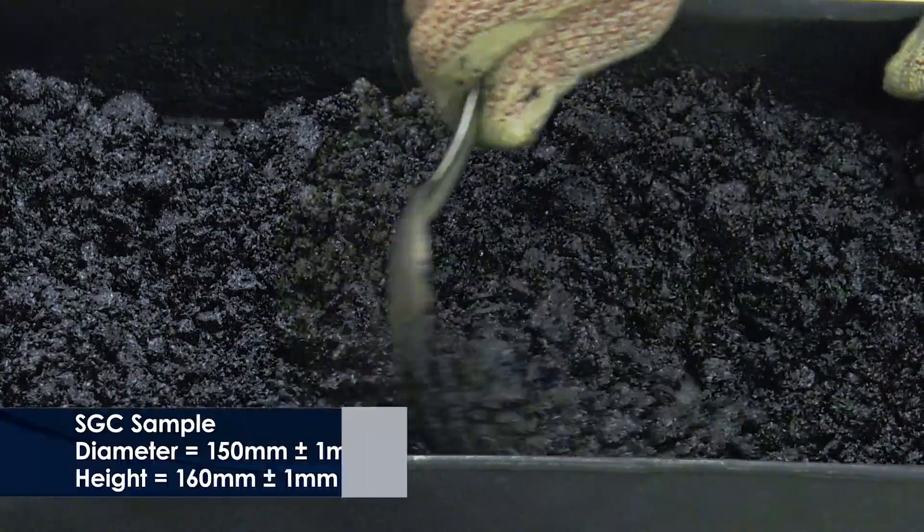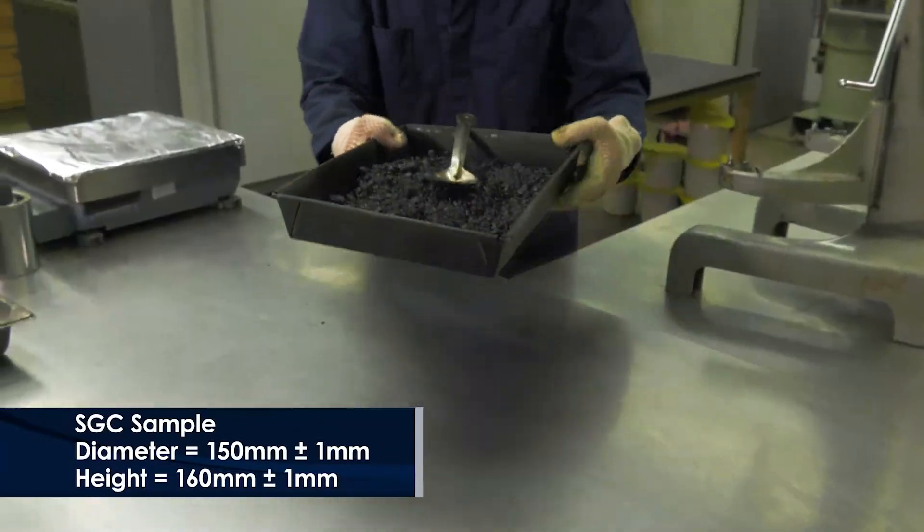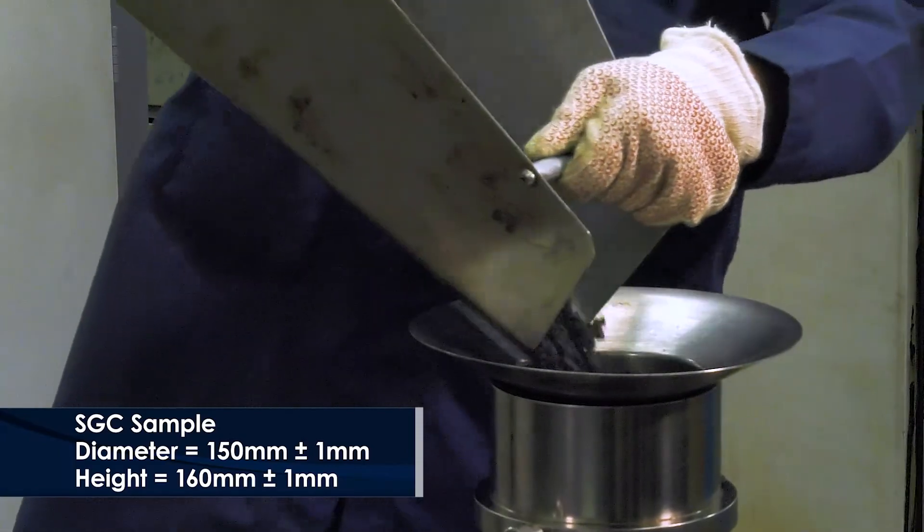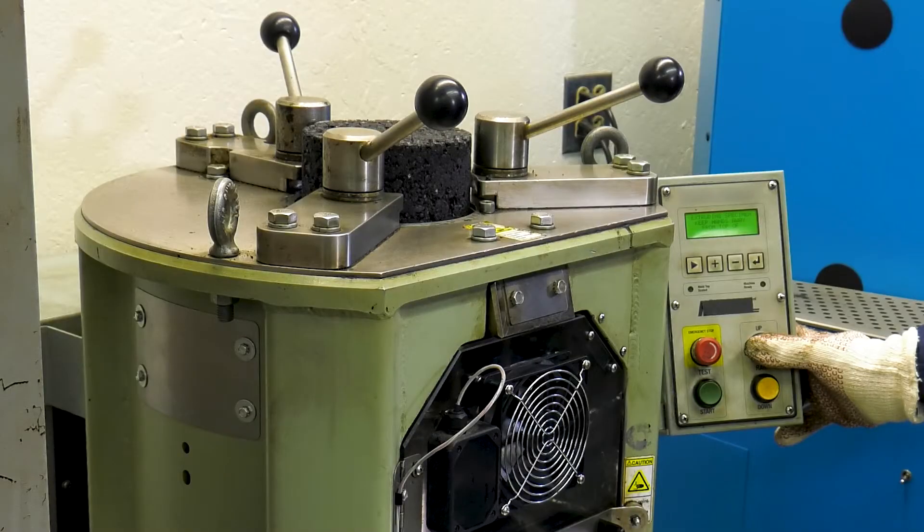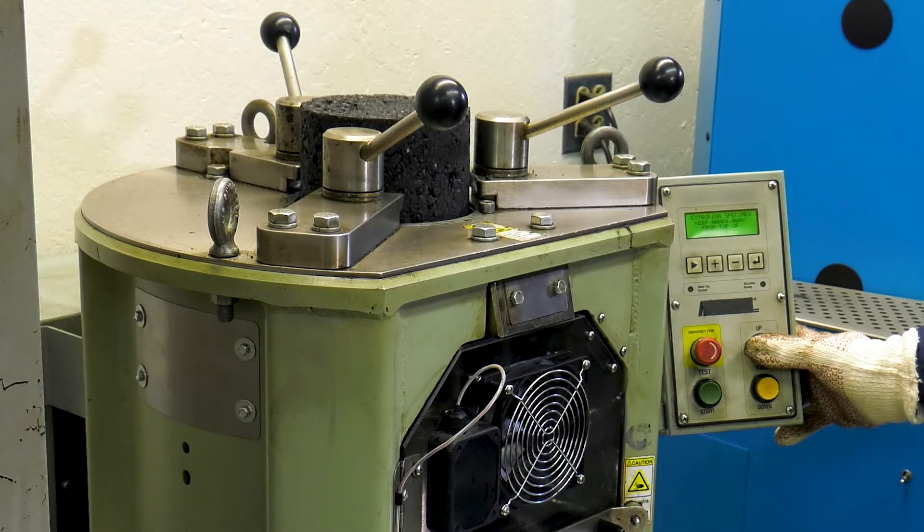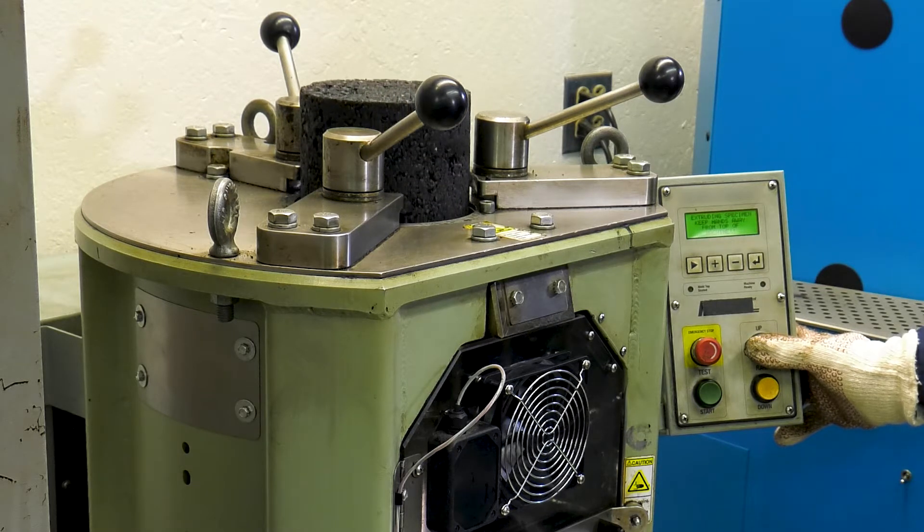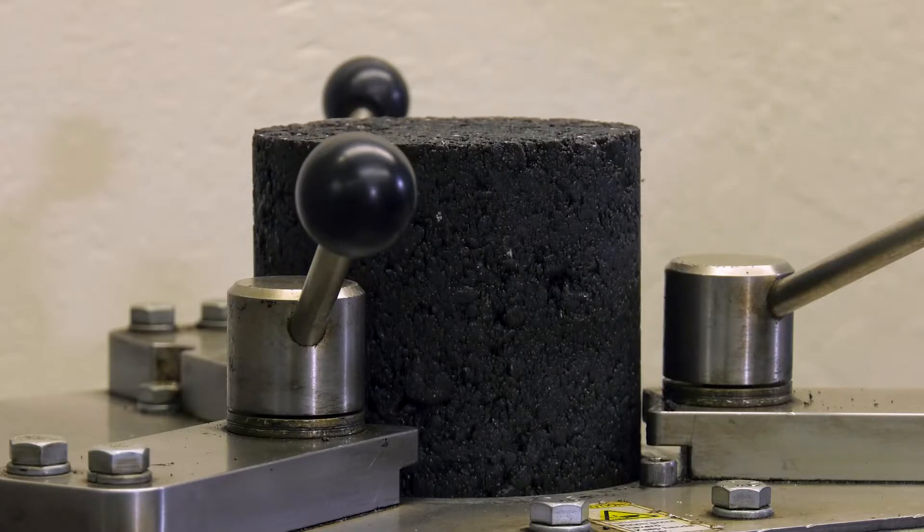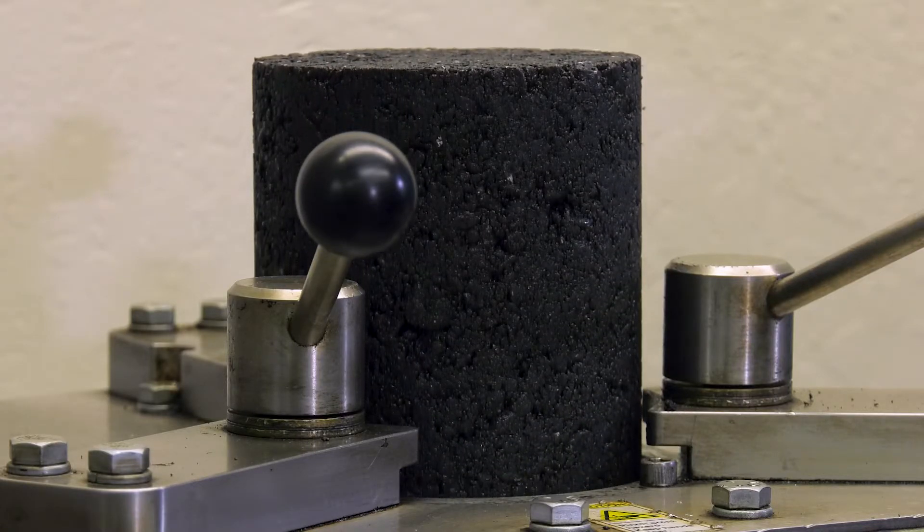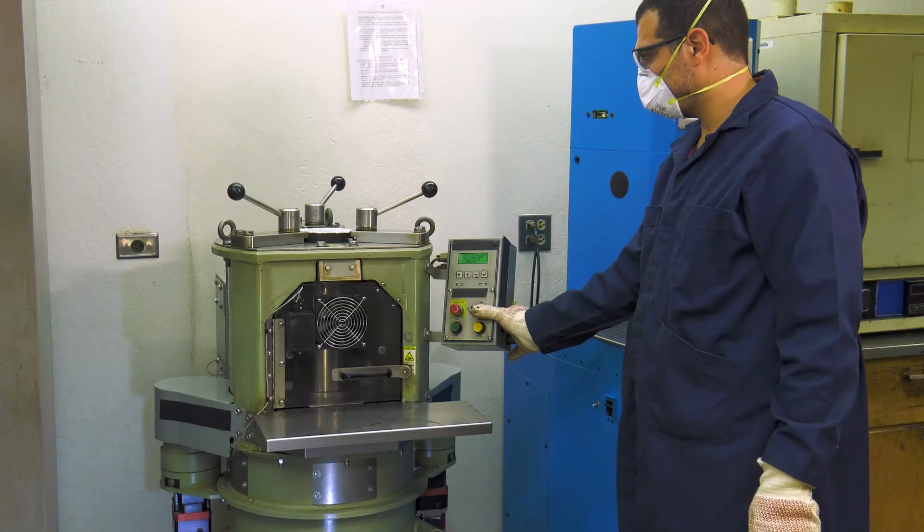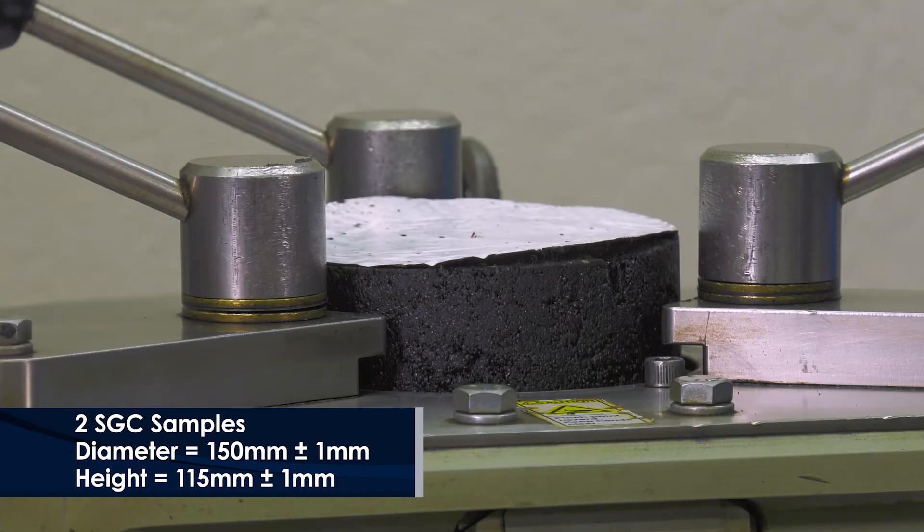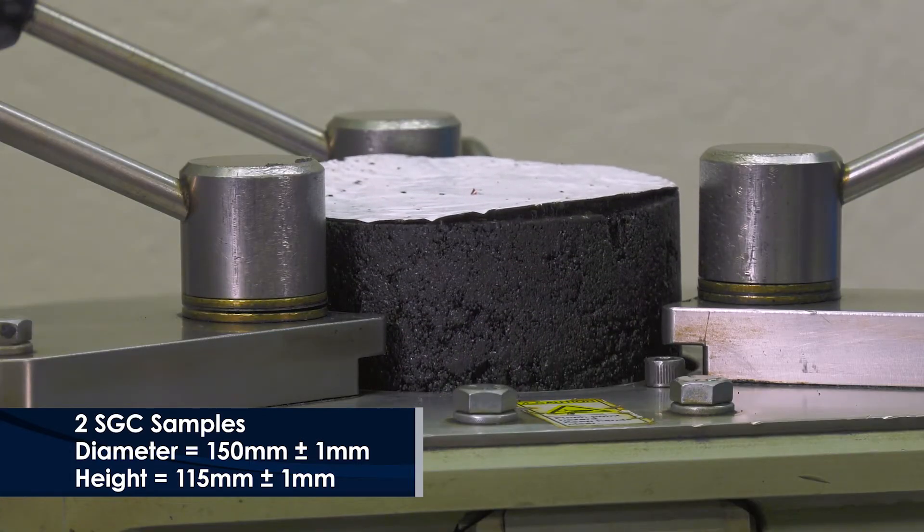For SGC compacted test specimens, fabricate SGC samples with a diameter of 150 millimeters and a height of 160 millimeters using a superpave gyratory compactor. The target air void content of the specimen should be 7% plus or minus 1%. If target air voids cannot be achieved for each 160 millimeter high SGC sample, a taller sample can be used. If a taller sample cannot be compacted, two 115 millimeter high SGC samples can be prepared.